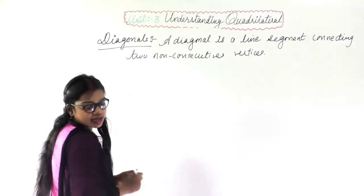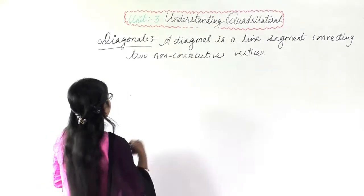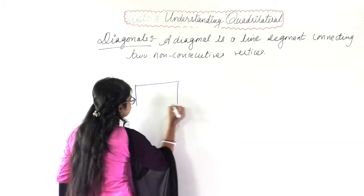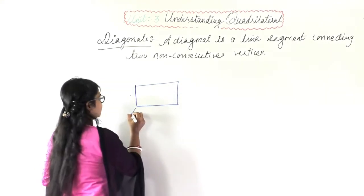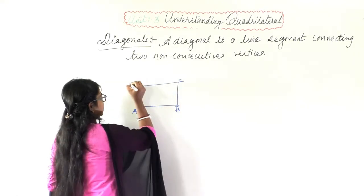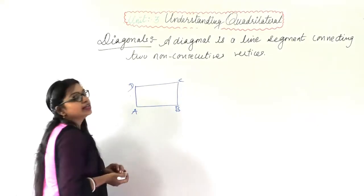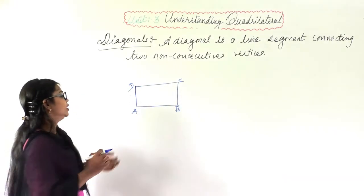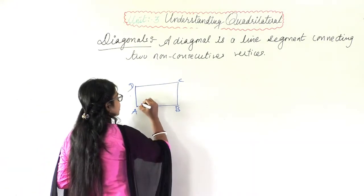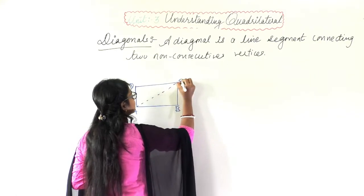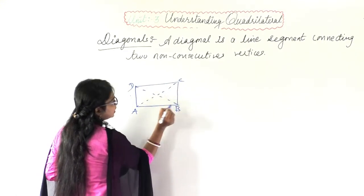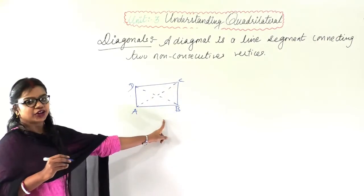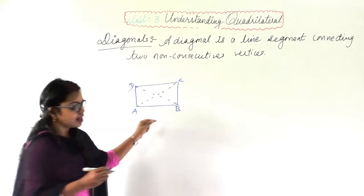Suppose I draw a figure like this — this is a rectangle named ABCD. I have to draw the diagonals of this rectangle. So I will join AC and BD. AC and BD are the diagonals of this rectangle.